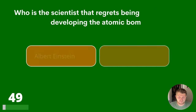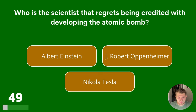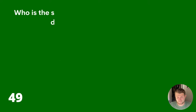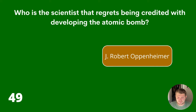Question 49. Who is the scientist that regrets being credited with developing the atomic bomb? Albert Einstein, J. Robert Oppenheimer or Nikola Tesla? The answer is J. Robert Oppenheimer.